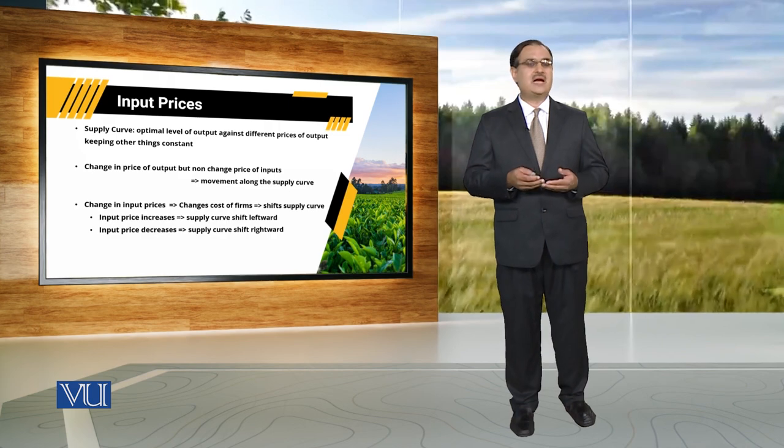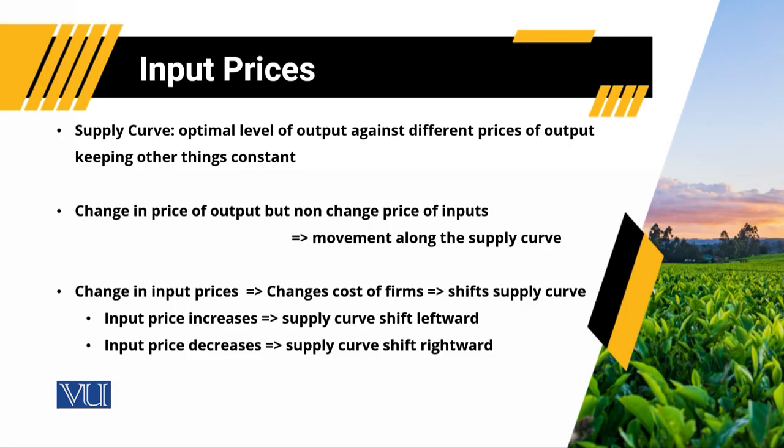But in real life, there is change in price of input, and because of that change in price of input, there is change in cost of production of the firms. And because of that change in cost of production of the firm, there are shifts in supply curves. Agar ham baat kerayin ke price of input increase ho gayi hai kisi bhi production process mein, because of that increase in input prices, supply curve will shift leftward, supply curve will shift downward, which indicates there is decrease in supply of that particular commodity.